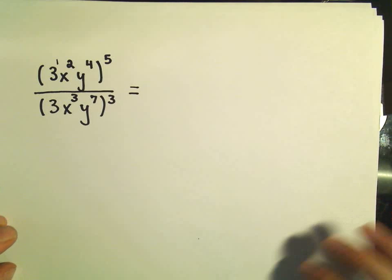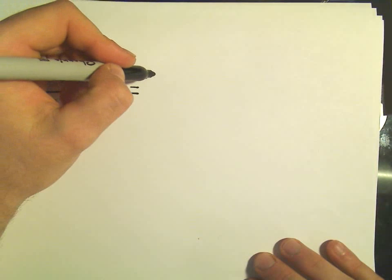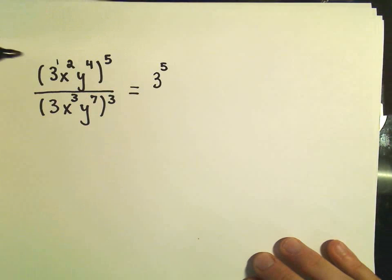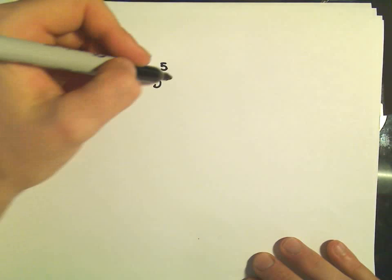So remember the first rule. It says if it's in parentheses, you just multiply the exponents. So 1 times 5 would be 3 to the fifth. Then we would have our x squared to the fifth. We'll take 2 times 5. That'll give us x to the tenth.